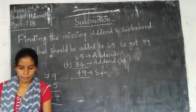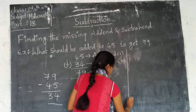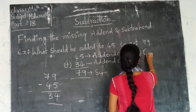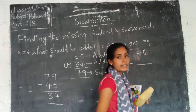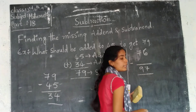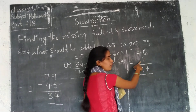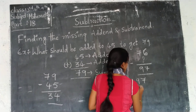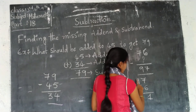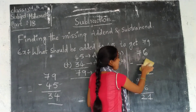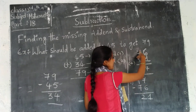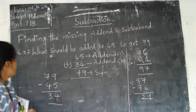One more example: what should be added to 76 to get 97? We subtract: 97 minus 76. 7 minus 6 is 1. 9 minus 7 is 2. So the missing addend is 21. To verify: 76 plus 21 — 6 plus 1 is 7, and 7 plus 2 is 9. Correct. This is how we find the missing addend.